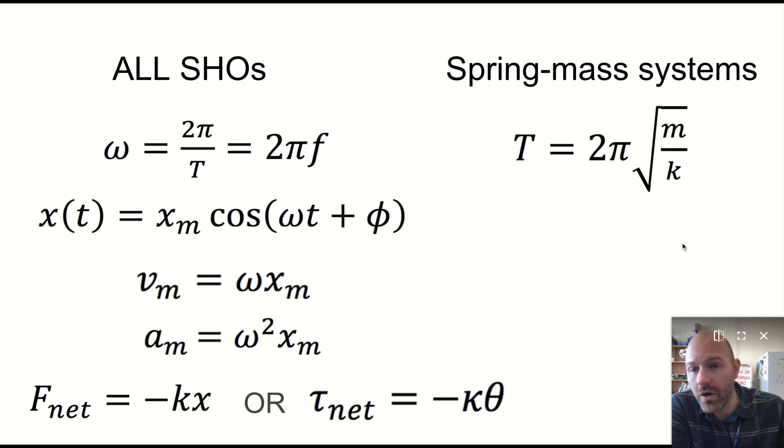That is true for all simple harmonic oscillators. These equations on the left. And then mass spring systems have this particular period. It turns out that even that period formula is true for all simple harmonic oscillators. But K doesn't represent the spring constant for all of them. So that's where we're going to go next.